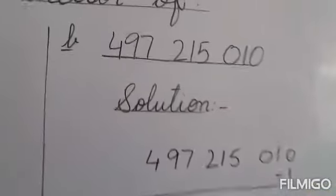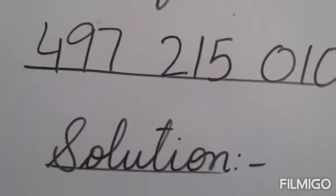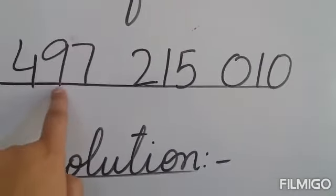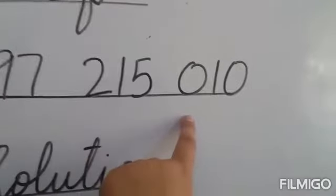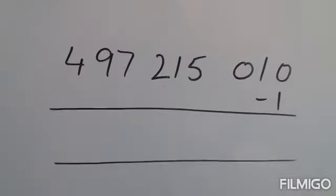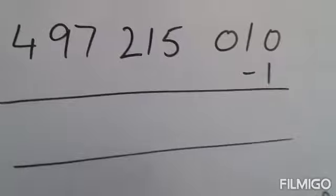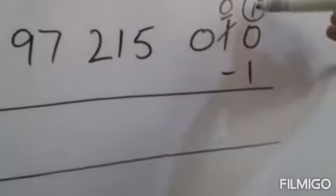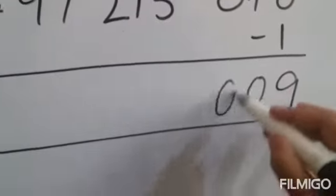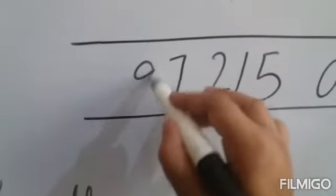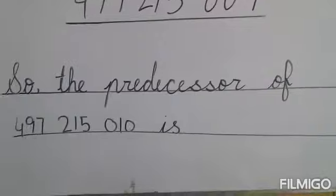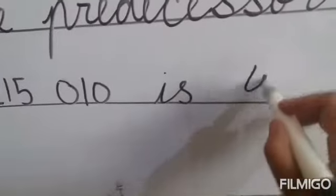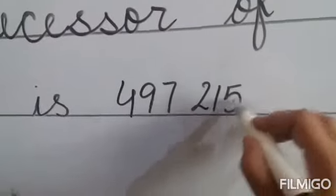Now let's do part B. The number is 497,215,010. To find its predecessor, we write this in the form of a subtraction sum. We cannot subtract 1 from 0, so we take a carry and make it 10. Here only 0 is left. Now 10 minus 1 is 9, and 0 and all other numbers will remain the same. So the predecessor of 497,215,010 is 497,215,009.